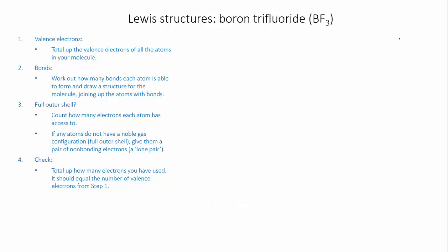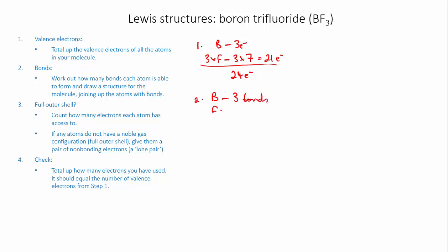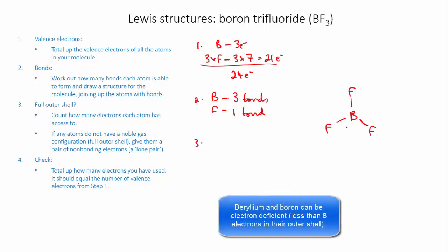Third example: boron trifluoride. Valence electrons: boron has three, and there are three fluorines which are in group 7 so they each have seven. Totalling that gives 24 electrons. For bonds, boron is in group 3 so it likes to form three bonds. Fluorine is in group 7 so it likes to form one bond. I have three fluorines and one boron — I'll put the boron in the middle and use one bond each to join the fluorines. Checking full outer shells: boron has access to six electrons, and since boron is one of the electron-deficient exceptions, it's happy with six.